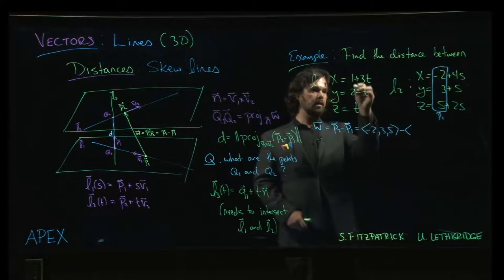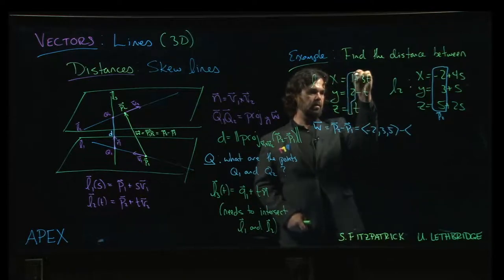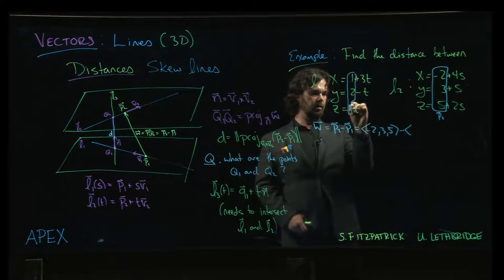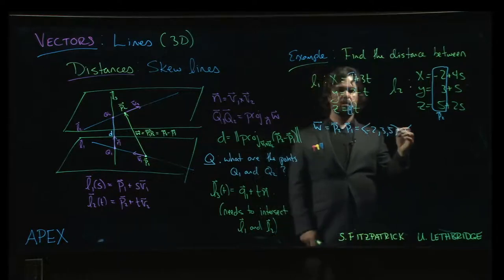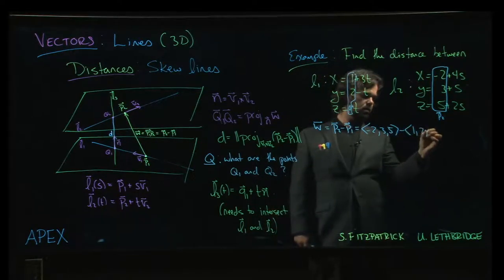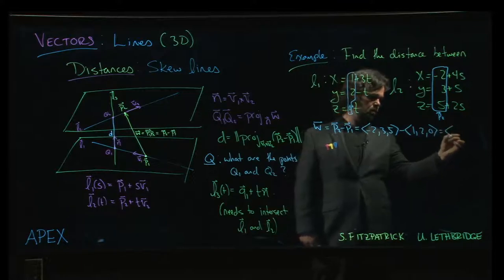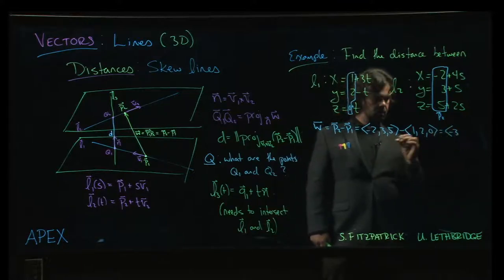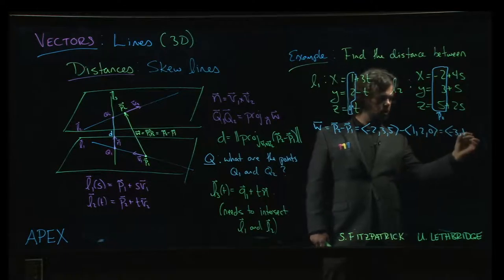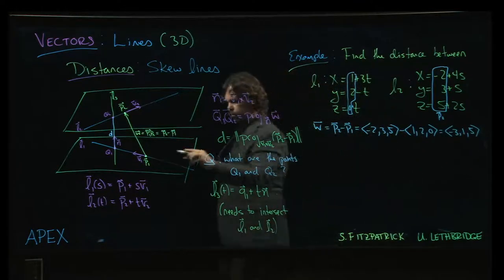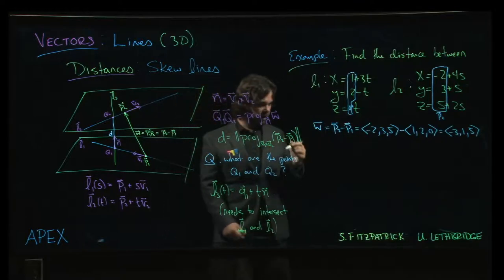And then the position coordinates for the second line is 0 plus t, so it is 1, 2, 0. So we get minus 3, 1, 5. So that is our vector that starts on one line and ends on the other.